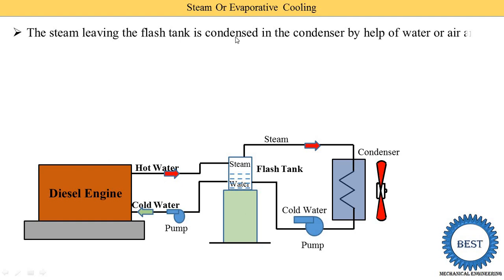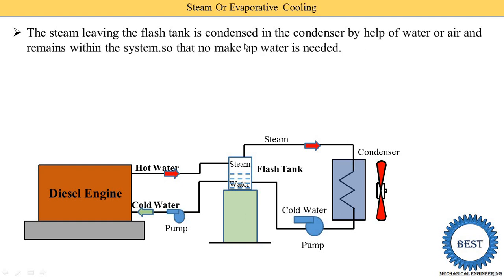The steam leaving the flash tank is condensed in a condenser — meaning the vapour is converted into liquid water. This condensation occurs in a heat exchanger using either air or water. Here we use a fan, so it is air-cooled. Alternatively, cold water could also be used to cool the steam from the flash tank. The system remains closed so no makeup water is needed.